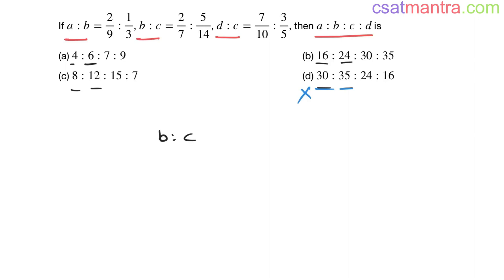For b is to c, we have 2/7 to 5/14. Seven ones are seven, two sevens are fourteen, so 4 is to 5. So c should be a multiple of 5.